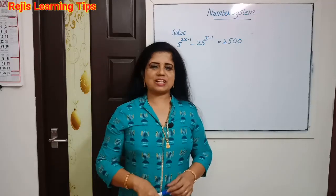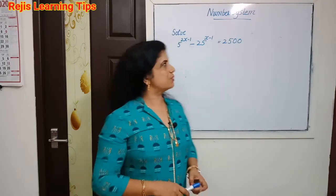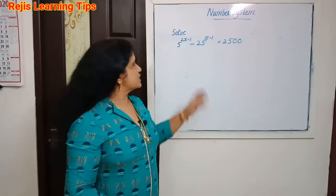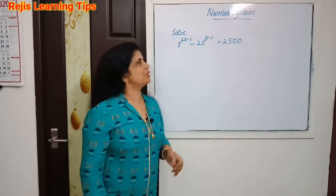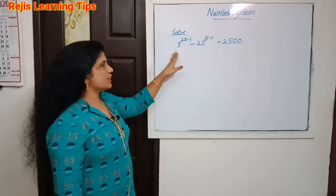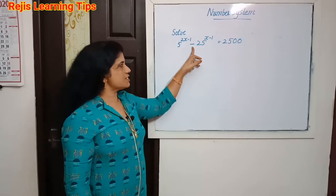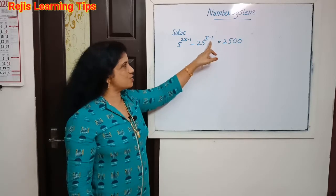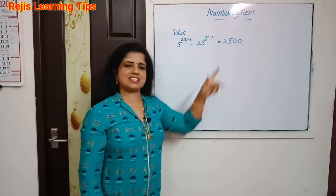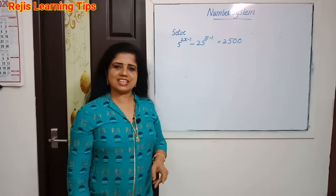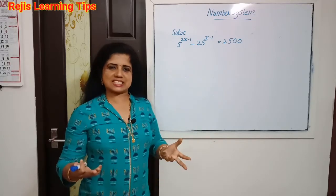Hi everyone, welcome back. Today we are going to discuss some questions from number system. Solve 5 raise to 2x minus 1, minus 25 raise to x minus 1, is equal to 2500. Solve means find the value of x.